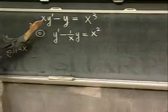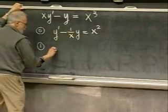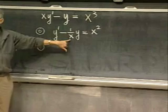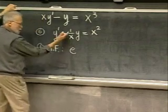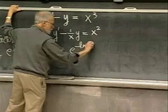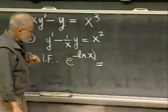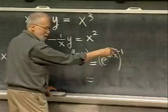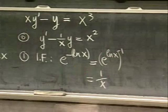Now calculate the integrating factor. The integral of negative 1/x is minus log(x), so the integrating factor is e to the negative log(x). In practice, simplify: e to the negative log(x) equals e to the log(x to the minus 1) equals x to the minus 1, which is 1/x. So the integrating factor is 1/x. Multiply both sides of the standard form equation by 1/x: we get (1/x)y prime minus (1/x²)y equals x.